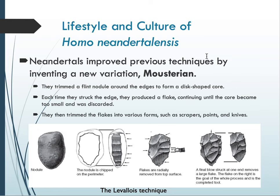Modern Homo sapiens are tall, long, and lean, whereas Neanderthals are short and stocky, reducing surface area to prevent heat loss in an arctic environment. The lifestyle and culture of Homo neanderthalensis is much more expansive than anything seen before. They used up-close hunting techniques, killing very large animals with spears tipped with stones made using the Mousterian technique — trimming around a flint nodule to create a disc-shaped core, then striking the edge to produce flakes that were trimmed into scrapers, points, and knives called Levallois flakes.